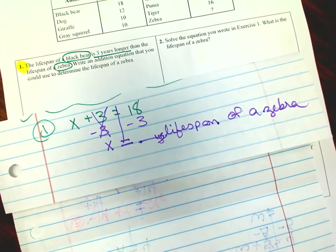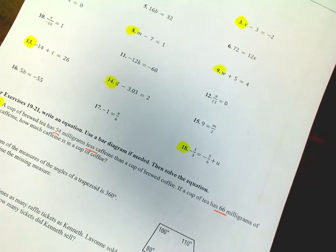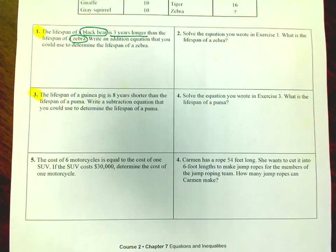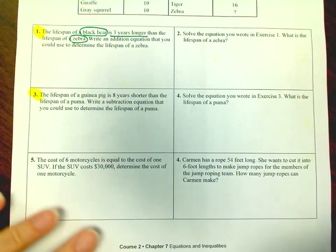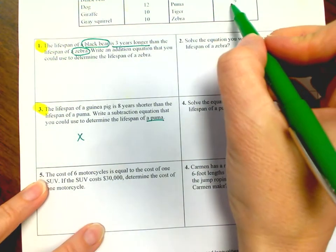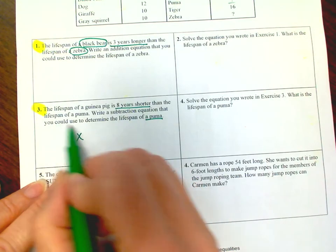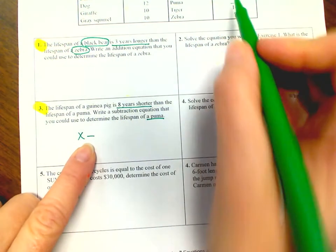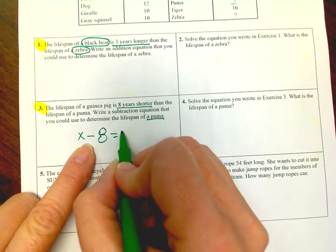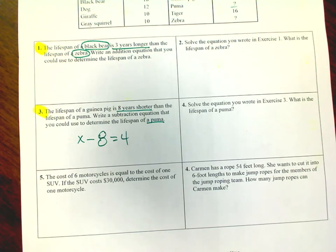Word problems — you always have to answer in sentence form, so make sure you do that on numbers 19 and 20. Number 3 on the back: the life span of a guinea pig is 8 years shorter than the life span of a puma. Write a subtraction equation to determine the life span of a puma. We're looking for the puma, so put x. The guinea pig is 8 years shorter, so the equation uses minus 8 and equals 4. Cancel out the 8 by adding it to both sides and you'll find your x. Remember to answer in sentence form.